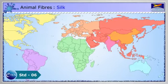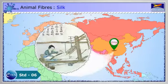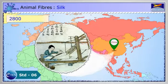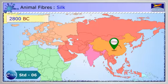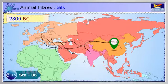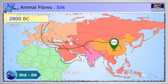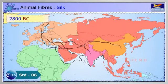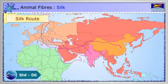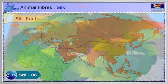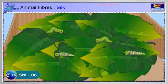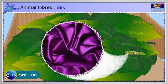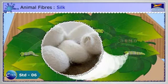In China, silk production began around 2800 BC and became a major export, opening up trade routes and partnerships with countries worldwide. From China, it came to India, Europe, Africa and Middle East. The trade route between these countries was known as the silk route. We get silk from silkworm. Silk fibre is obtained from the cocoons of the silk moth.